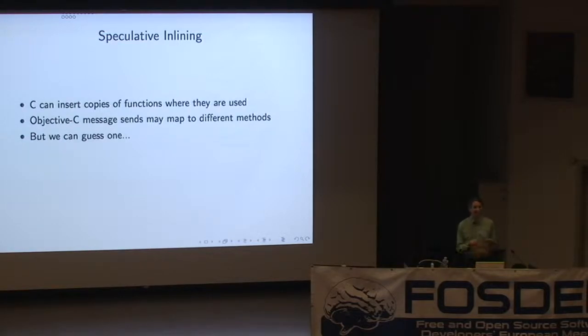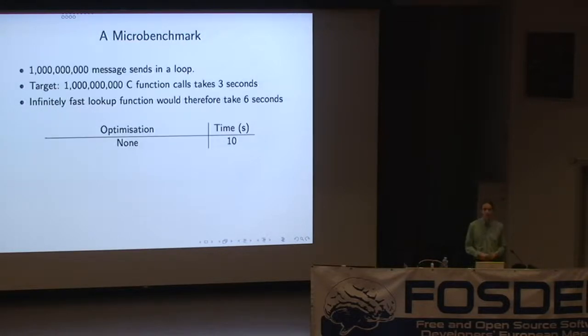But we can guess one. And there are some heuristics we can use, and there's profiling that we can do. And then we can try inlining that. And then we can just wrap that in a little test, which says, did we guess right? If so, don't bother with the call. Just go straight through the inlined version. And that then lets you do some other optimization, so you can take the inlined path, and you can do constant propagation through that. And so that can have some nice speed-ups.